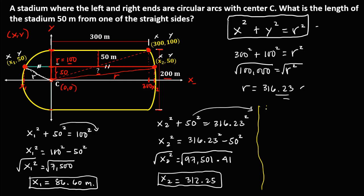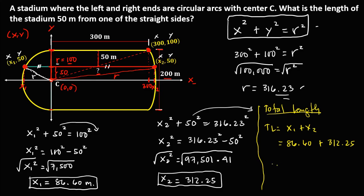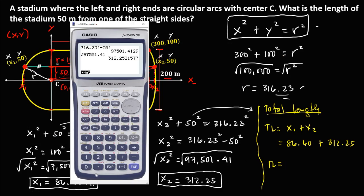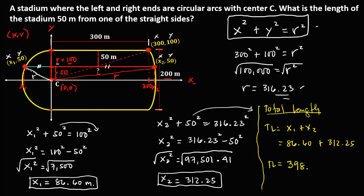To solve for the total length: total length = x₁ + x₂ = 86.60 + 312.25 = 398.85 meters. So the total length is 398.85 meters. This is the final answer.